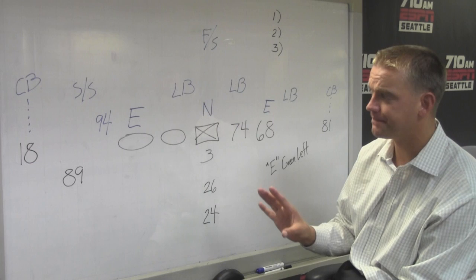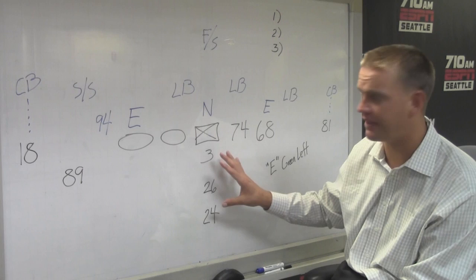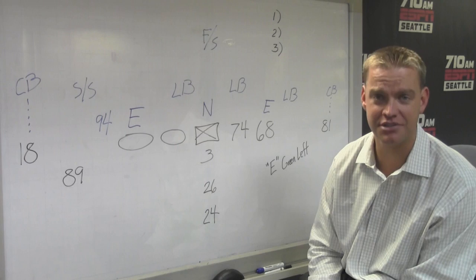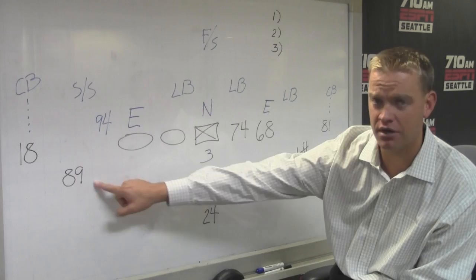First of all, this formation I think we better get familiar with as Seahawks fans. You should recognize this because this is a lot of what the Seahawks used when they got to the Super Bowl back in 2005. This was Max Strong and Shawn Alexander. This was Bobby Ingram.